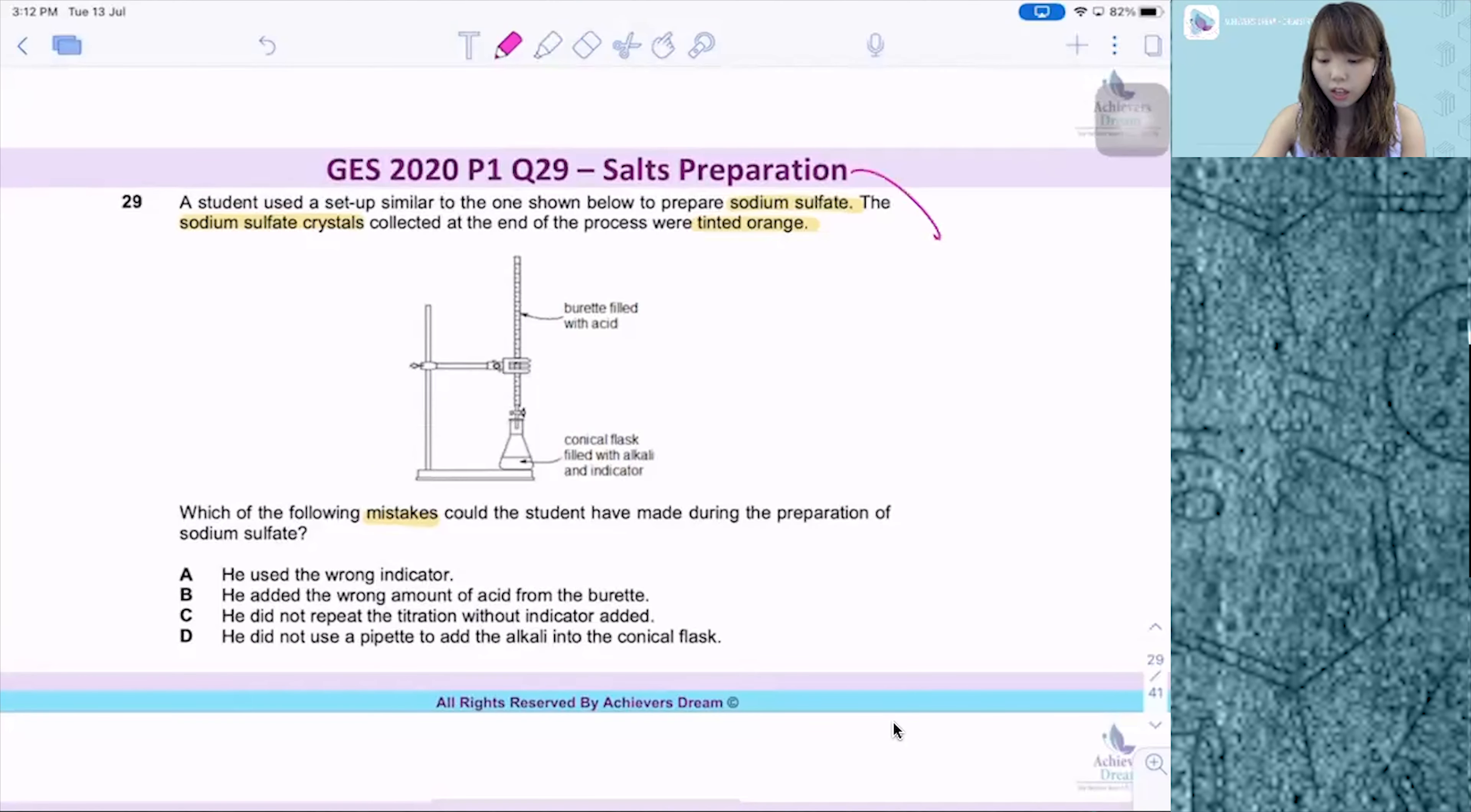This is under salts prep. Just a recap, there are three methods of salts prep that you need to know. First one is precipitation, second is excess, and the third one is titration method.